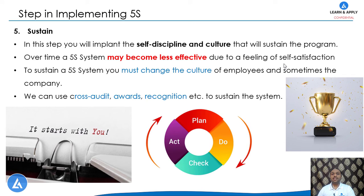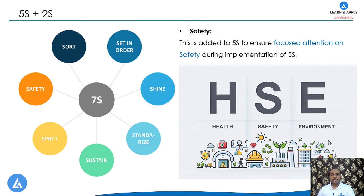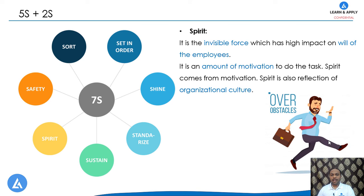In recent modifications of the 5S program, two more S's have been added — Safety and Spirit. Safety was added to ensure focused attention on safety during the entire 5S implementation activities, covering the safety and health of employees as well as the environment. The second addition, Spirit, is the invisible force that has a high impact on the will of employees. Involvement from all employees of the organization is very important for successful implementation of 5S.